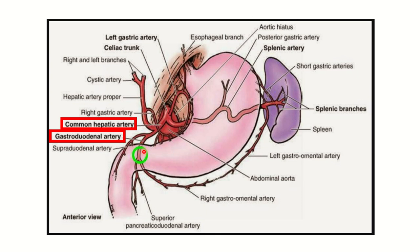We can see this is the first part of the duodenum, and this is where ulcers typically occur. There is a vessel running just behind this first part of the duodenum — the name of this artery is the gastroduodenal artery. The bleeding within the duodenal lumen is caused by ulceration in the first part of the duodenum, which causes erosion of this artery, the gastroduodenal artery.